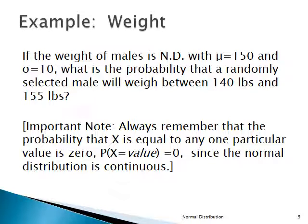If you know how to use the normal distribution and read the table, you can solve all kinds of problems. For example: the weight of adult men is normally distributed with a mean of 150 pounds and a sigma of 10 pounds. What's the probability that a randomly selected male will weigh between 140 and 155 pounds? We'd never ask the probability that a man weighs exactly 150 pounds, because technically the answer is zero — nobody weighs exactly 150 pounds, as this is a continuous measurement.